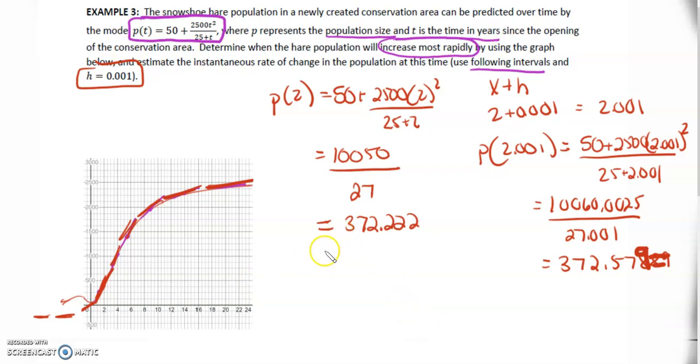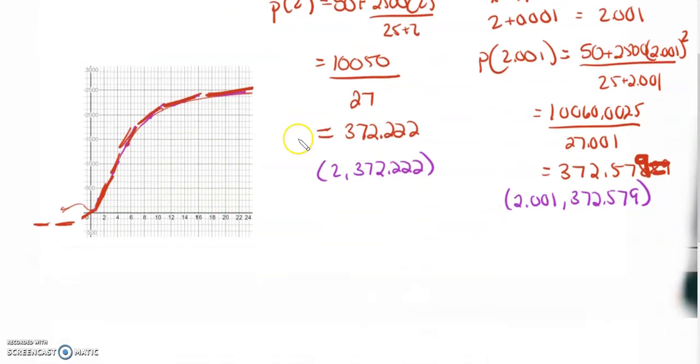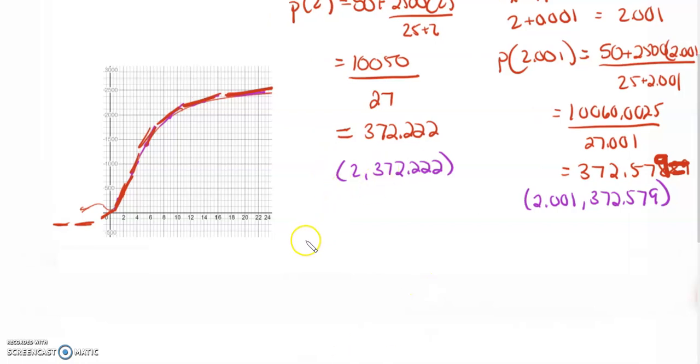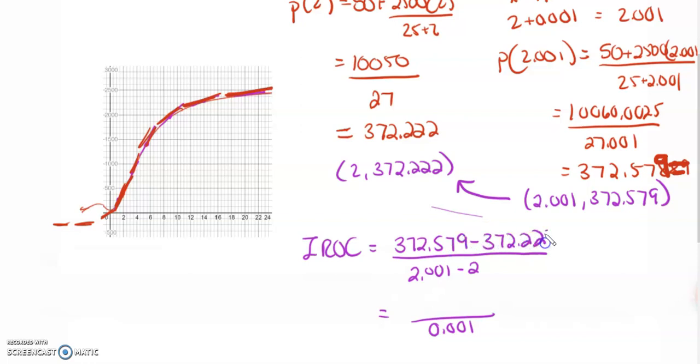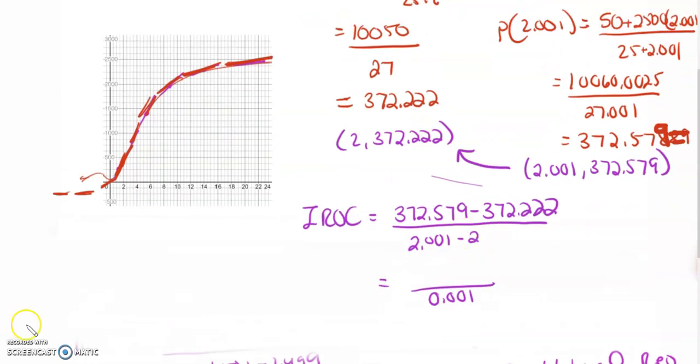In other words, we have the point 2, 372.222, and the point 2.001, 372.579. Now let's find the instantaneous rate of change. I'm going to go second point minus first point because in the denominator I want a positive h value. So I get 372.579 minus 372.222, which gives 0.357, which gives us an instantaneous rate of change of 357.